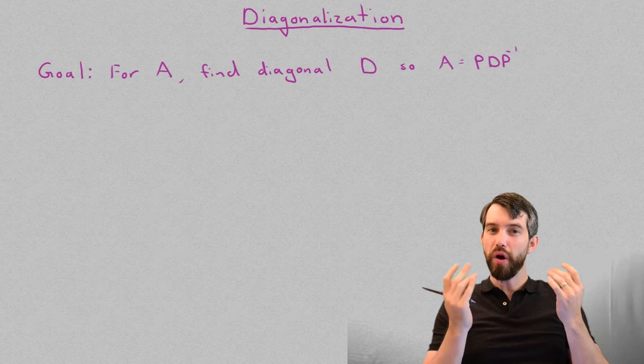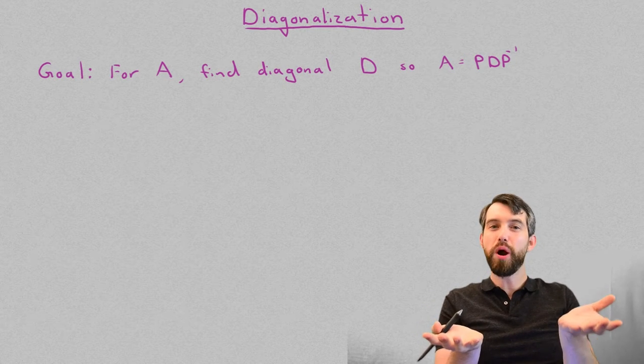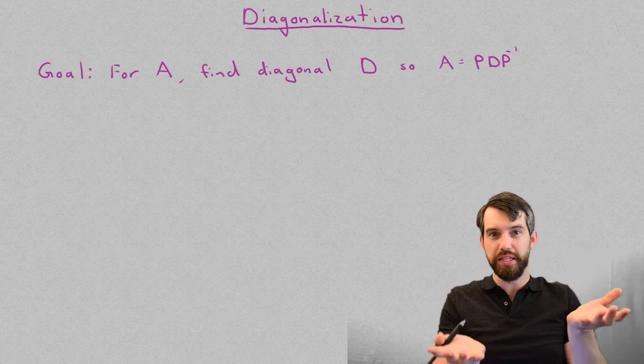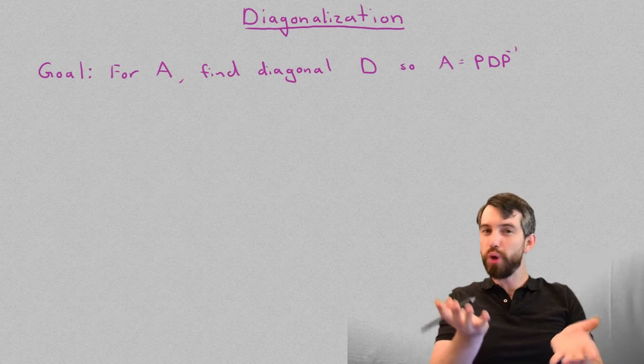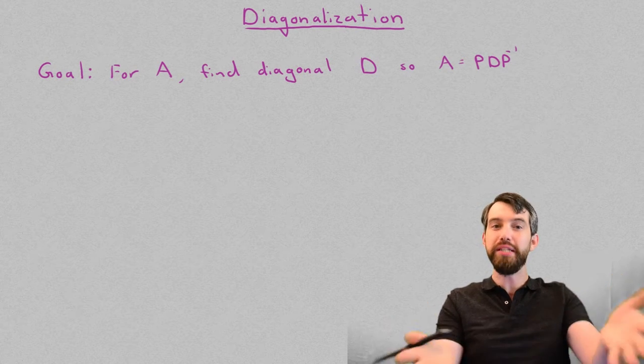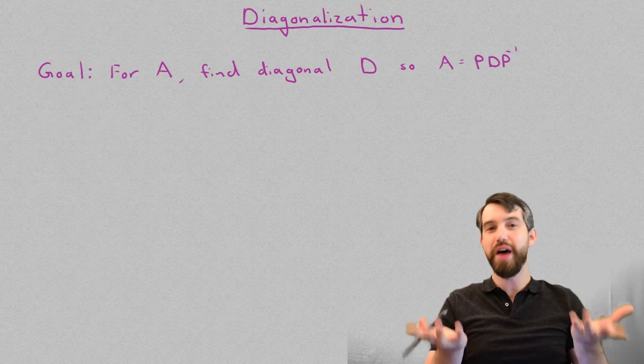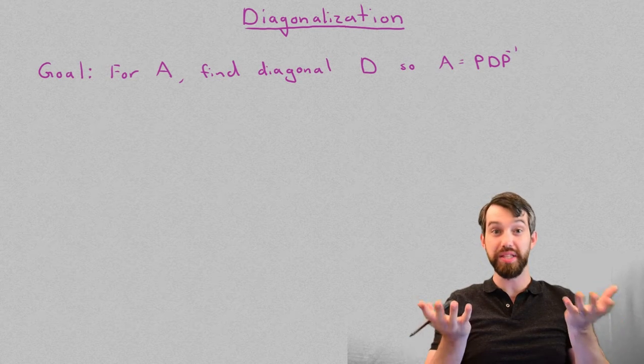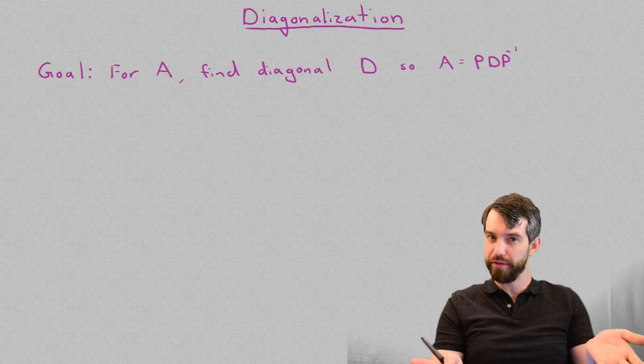Now, we've also seen that if you have two matrices and they have the property of being similar matrices, a lot of the properties are going to be similar. For instance, the eigenvalues of two similar matrices are going to be the same, although admittedly, the eigenvectors will differ.